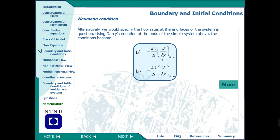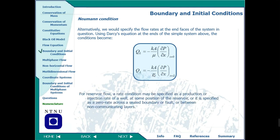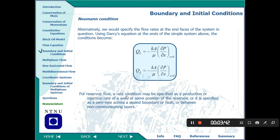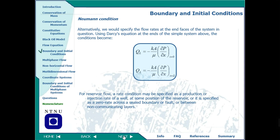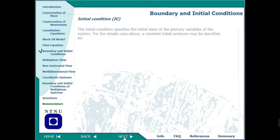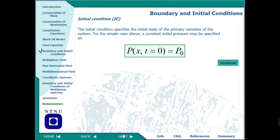This flow rate condition uses Darcy's law because we are talking about single-phase flow here. Any mathematical model without those boundary conditions is not valid. For reservoir flows, the rate condition may be specified for production or injection wells at some position of the reservoir. These are the primary variables, and you will see how we define them when we do reservoir simulations.